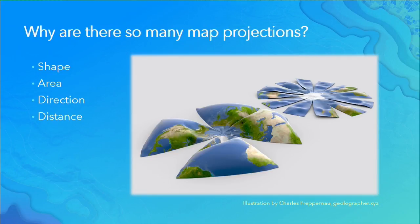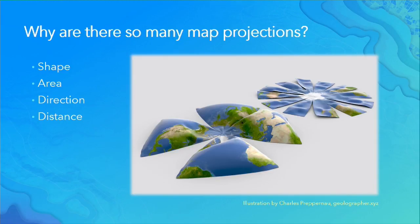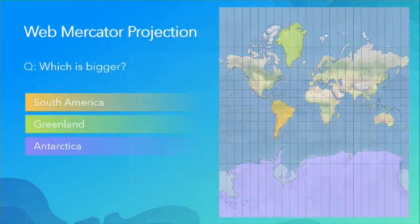Why are there so many projections? If you think about it, take an orange, peel it off, and try to flatten it — it doesn't end up flat, it ends up bumpy. Something in a projection has to be distorted. Remember SADD: shape, area, direction, distance — one or more of these will be distorted in any projection.